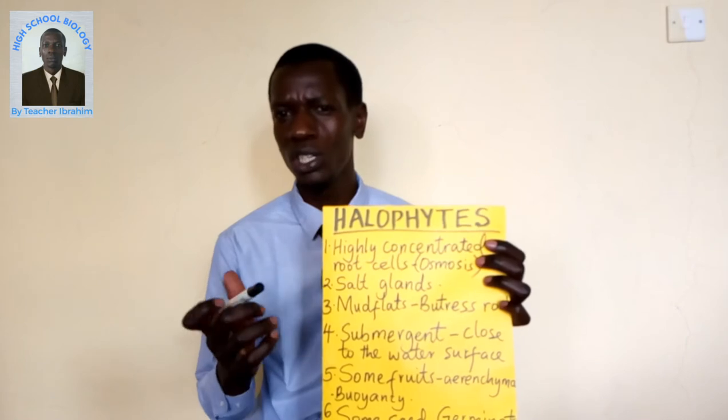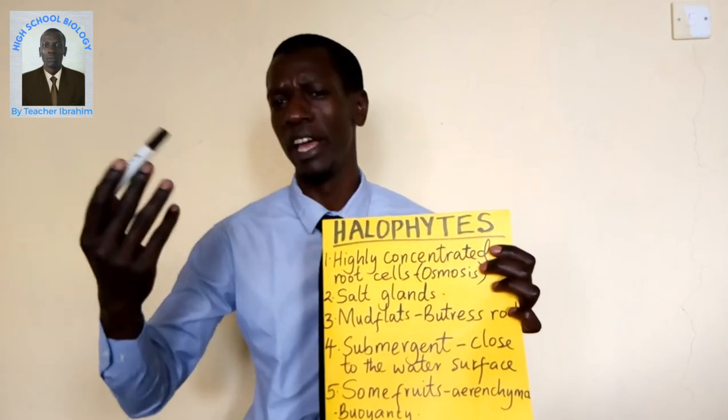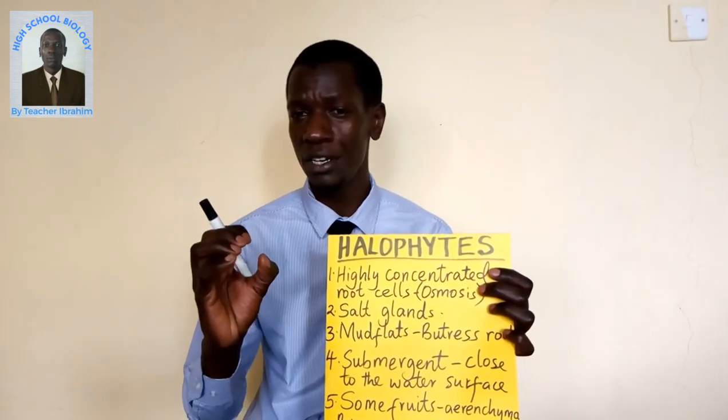Number two: some have salt glands to enable them to excrete salts directly into the environment. During water absorption, some salt dissolved in that water is taken in along with it. This salt is channeled to the salt gland in either the stem or parts of the leaves. Once accumulated there, the salt gland moves close to the surface and bursts, releasing the salt out of the plant.